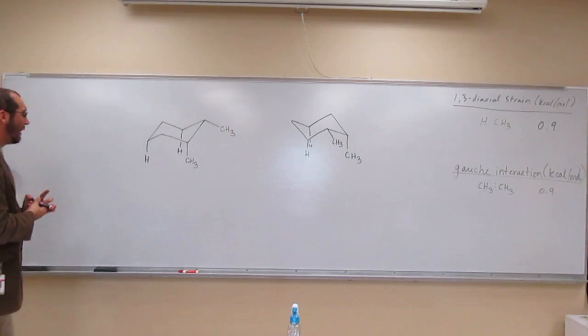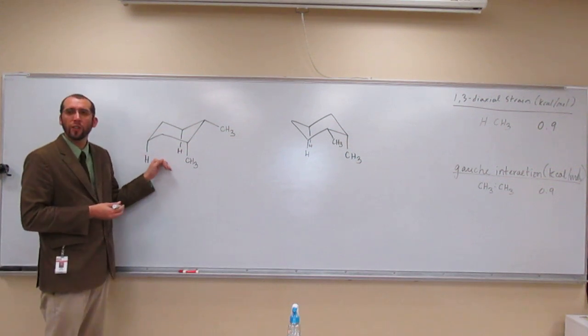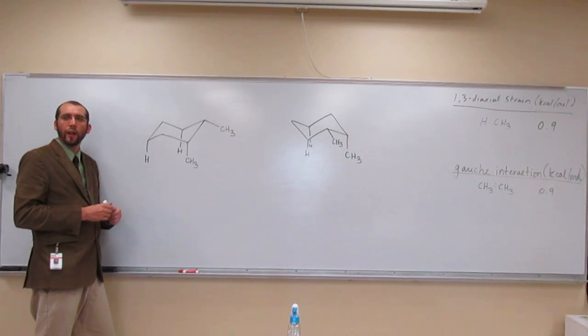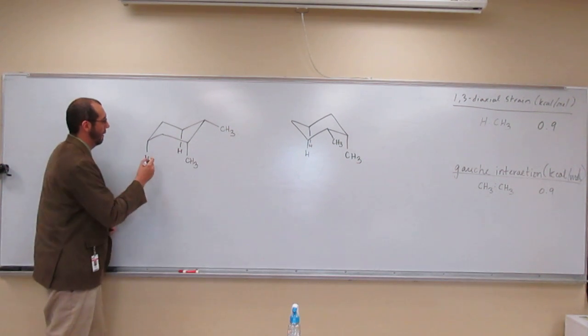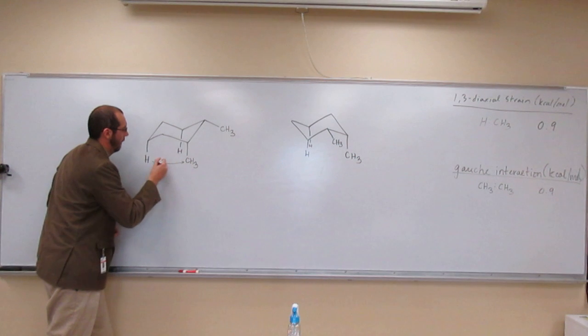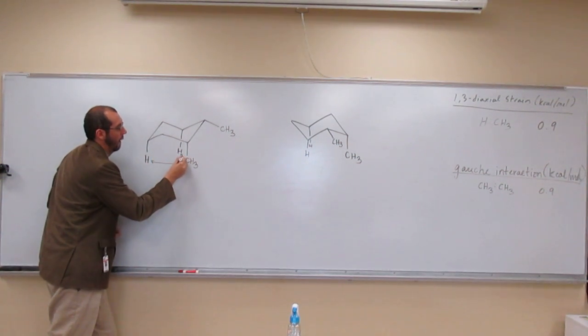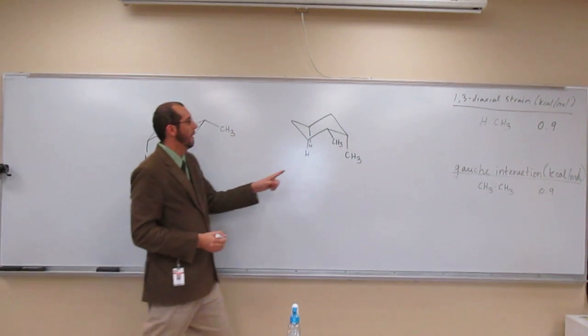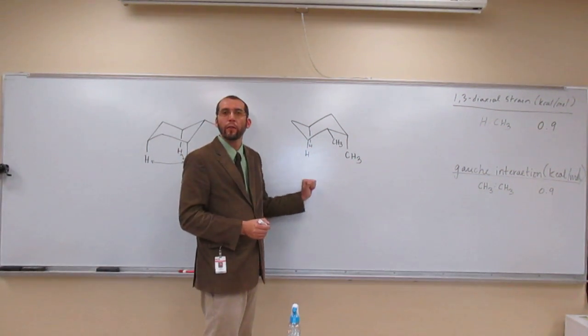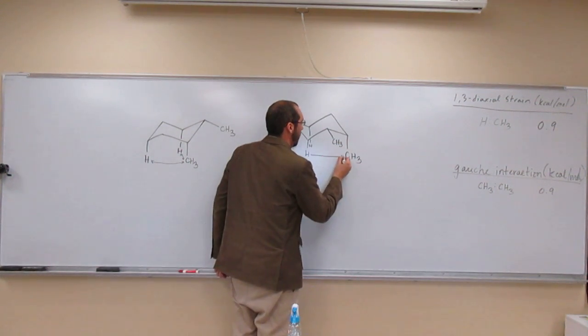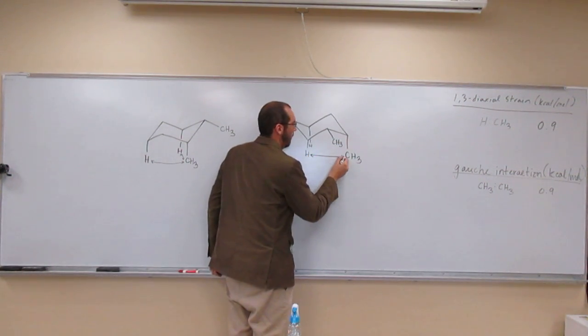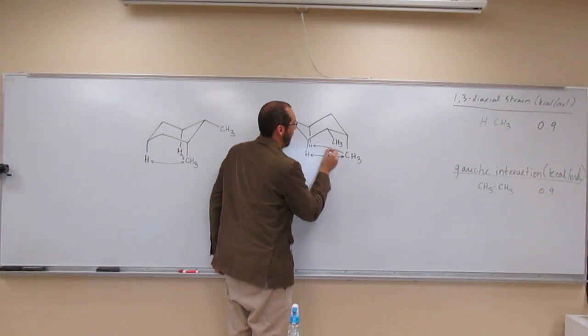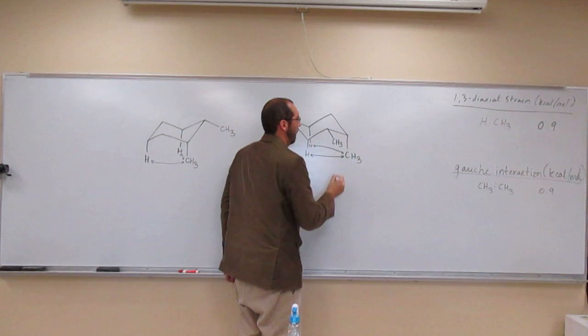So in this structure here, how many 1,3-diaxial methyl-hydrogen interactions do I have? Two. Very good. They're right here and right there. What about in this structure here? How many do I have? Two. They're right here and right there.